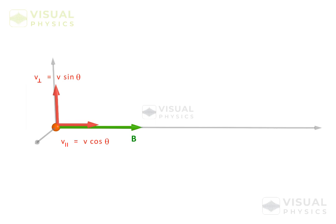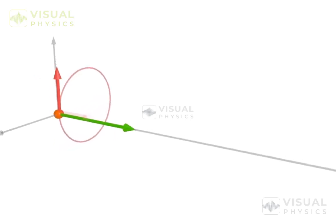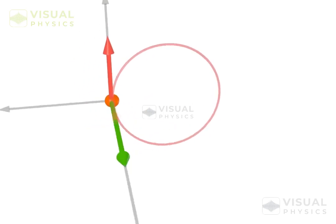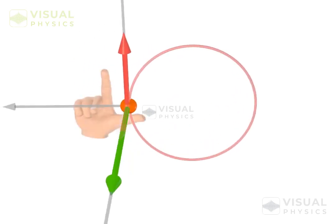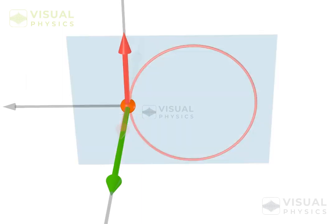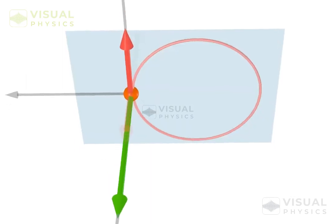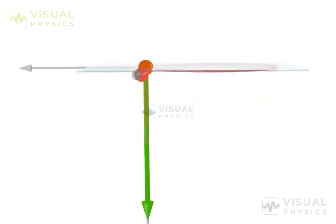Due to perpendicular component alone, the particle will follow a circular path, such that the circle lies in a plane perpendicular to the magnetic field.